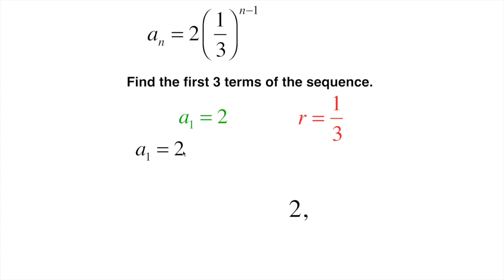Okay so we've got a sub 1, this is our first term, times one third. So 2 times one third would give me two thirds, so that's our second term.